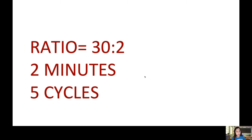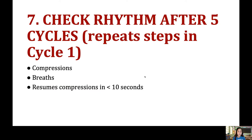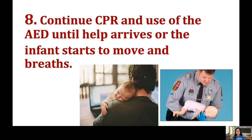For one rescuer, the ratio is 30 to 2, with two minutes or five cycles. After five cycles, check for rhythm and pulse on the brachial area. If the patient moves, place the baby in the recovery position — either on your shoulder or in the lateral position so secretions drain.